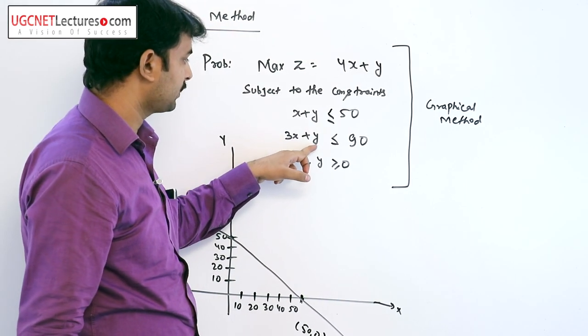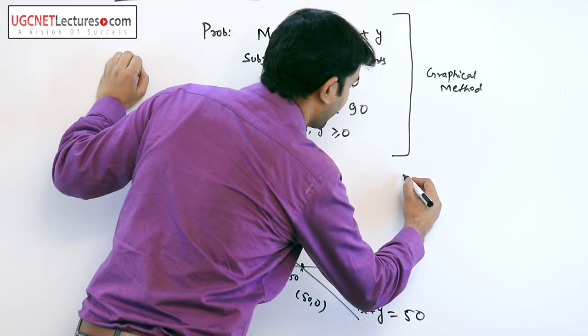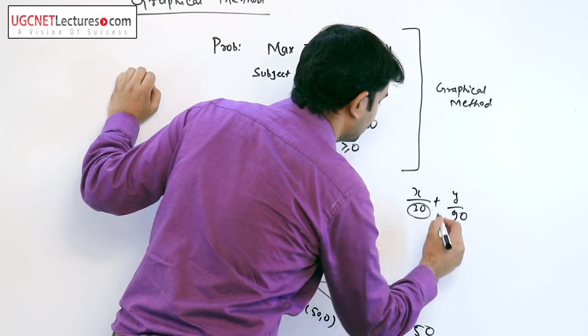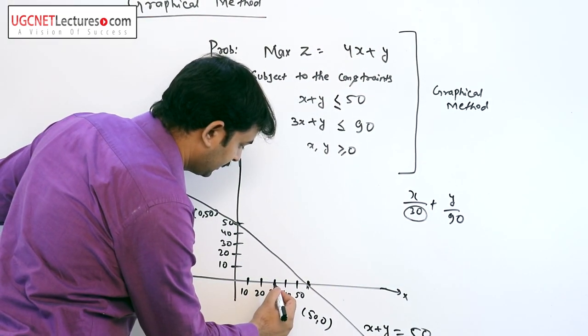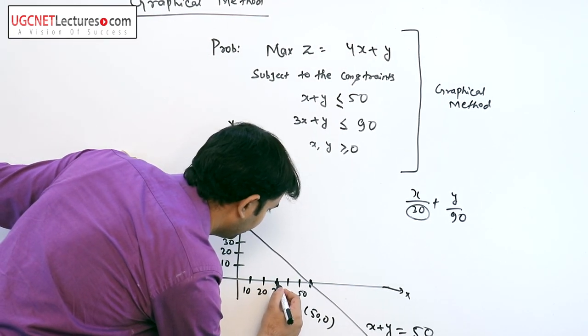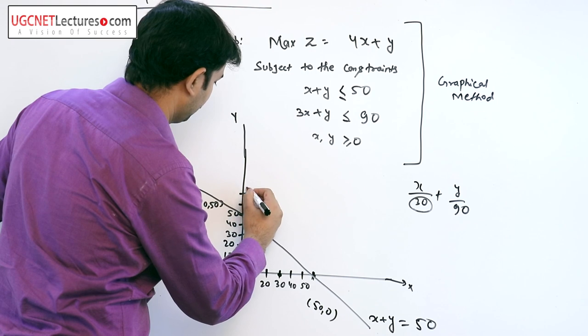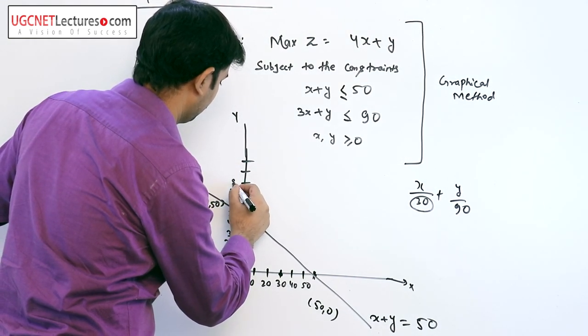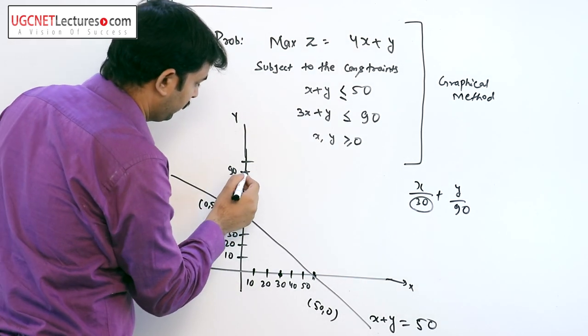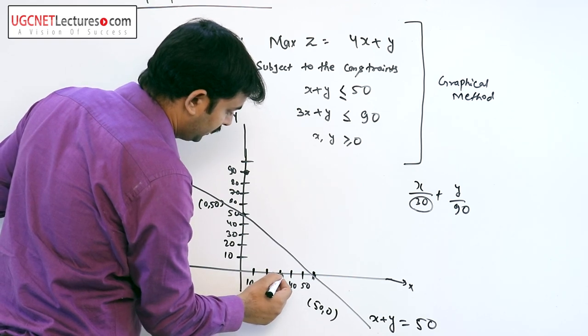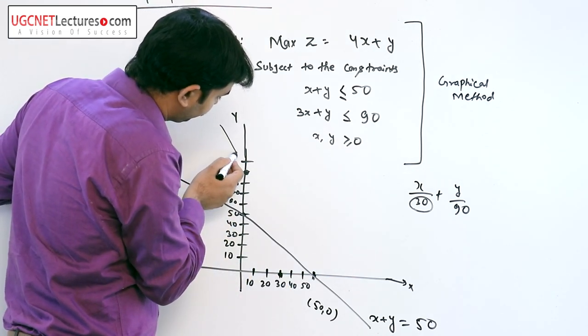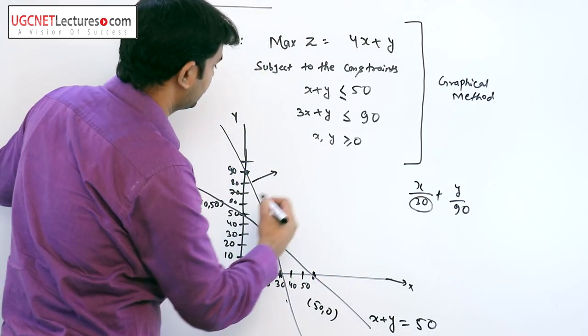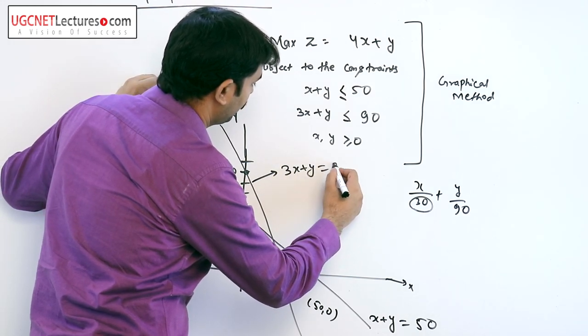The second equation is 3x plus y equals 90. Here the x-intercept is 30 and the y-intercept is 90. We have these points on the axes. If we draw a line between these two points, this line is 3x plus y equals 90.